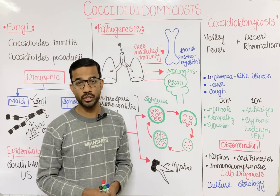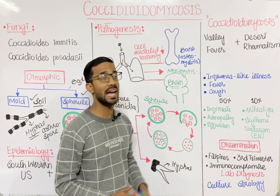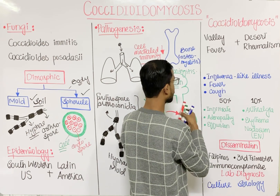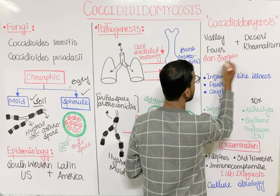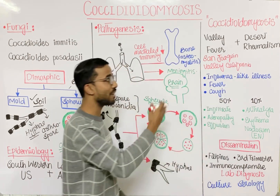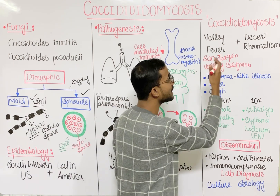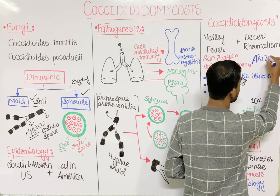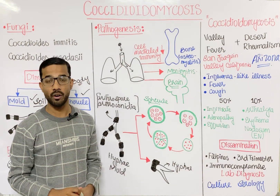The clinical findings of coccidioidomycosis: another name is valley fever or desert rheumatism. It is called valley fever based on the San Joaquin Valley of California, and desert rheumatism based on Arizona.